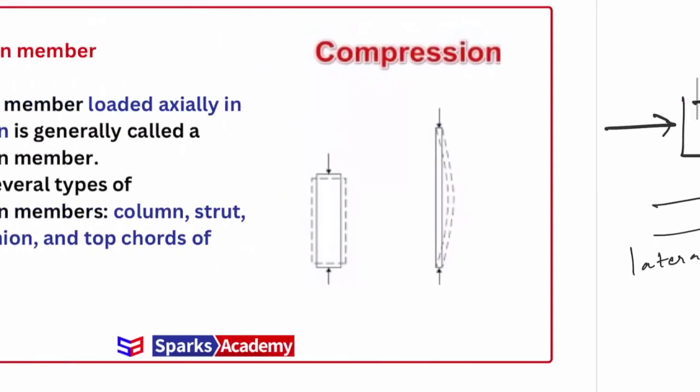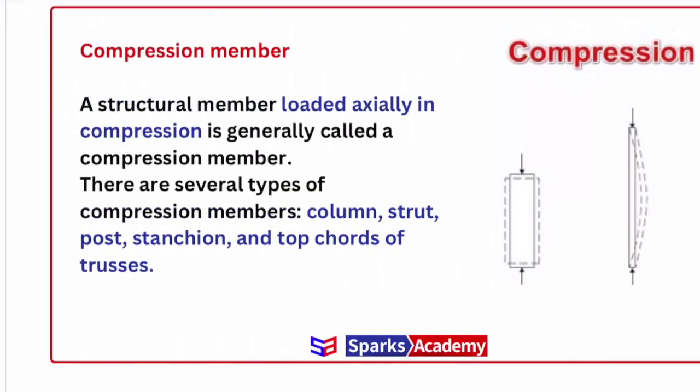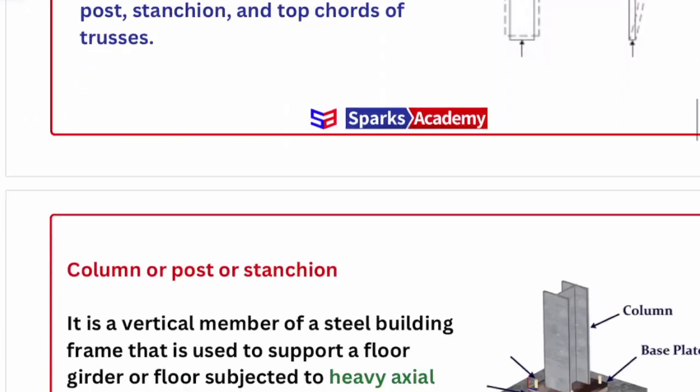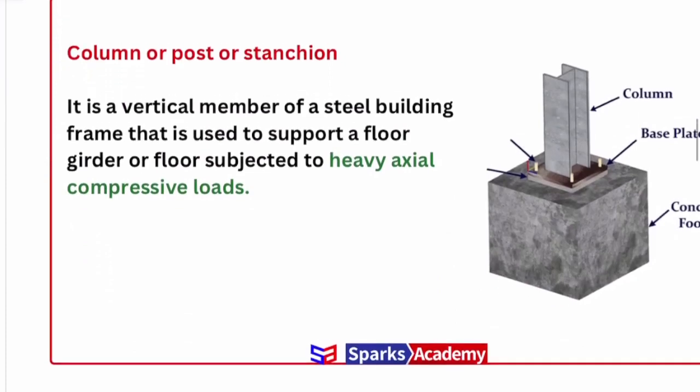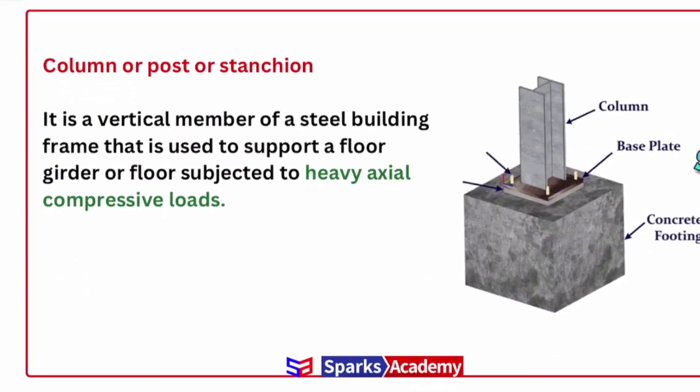So what types of compression members are present? Column, strut, post, stanchion, and top chords of trusses. What is the difference? Column and stanchion — what is the difference? Column and strut — what is the difference? These are the concepts. Column, post, and stanchion — these three names represent one member. It's three different names for the same thing.